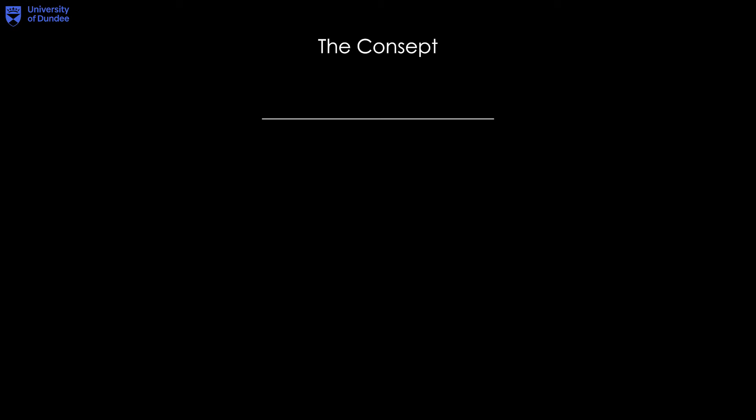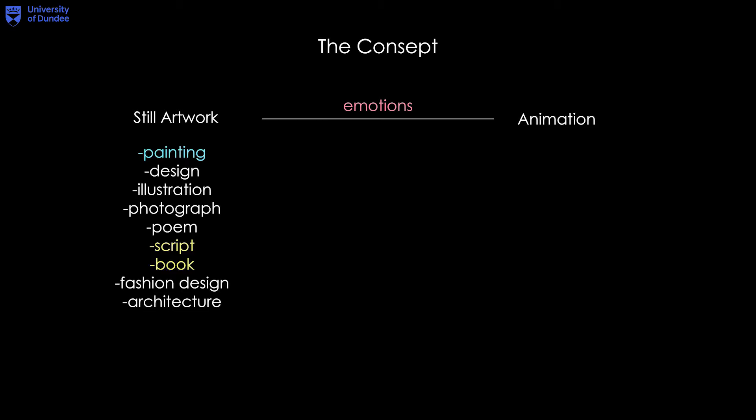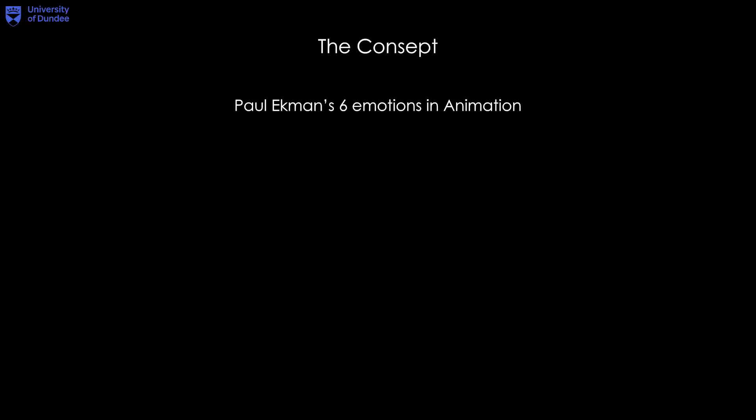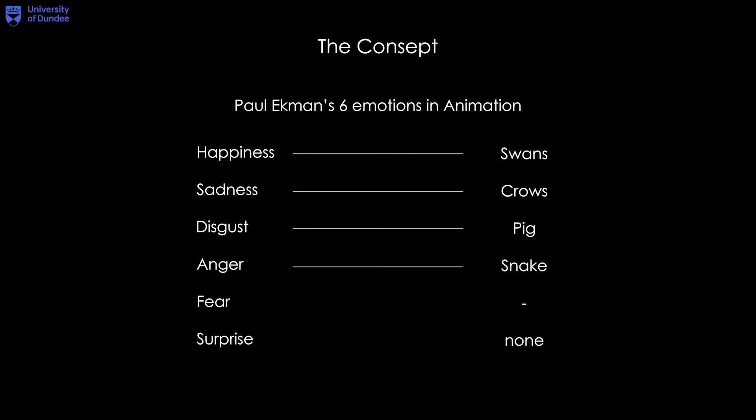The concept was about the relationship between still artworks and animation and how these two are related in order to evoke emotions. In the first semester I based my theory on still artworks, since creators in the animation industry use only scripts and books as the main source of inspiration. Without declining the previous theory, I continued with my research in Paul Ekman's theory about the six emotions in animation: happiness, sadness, disgust, anger, fear, and surprise. Each one is represented by a character that contributes to the main plot of my final video.